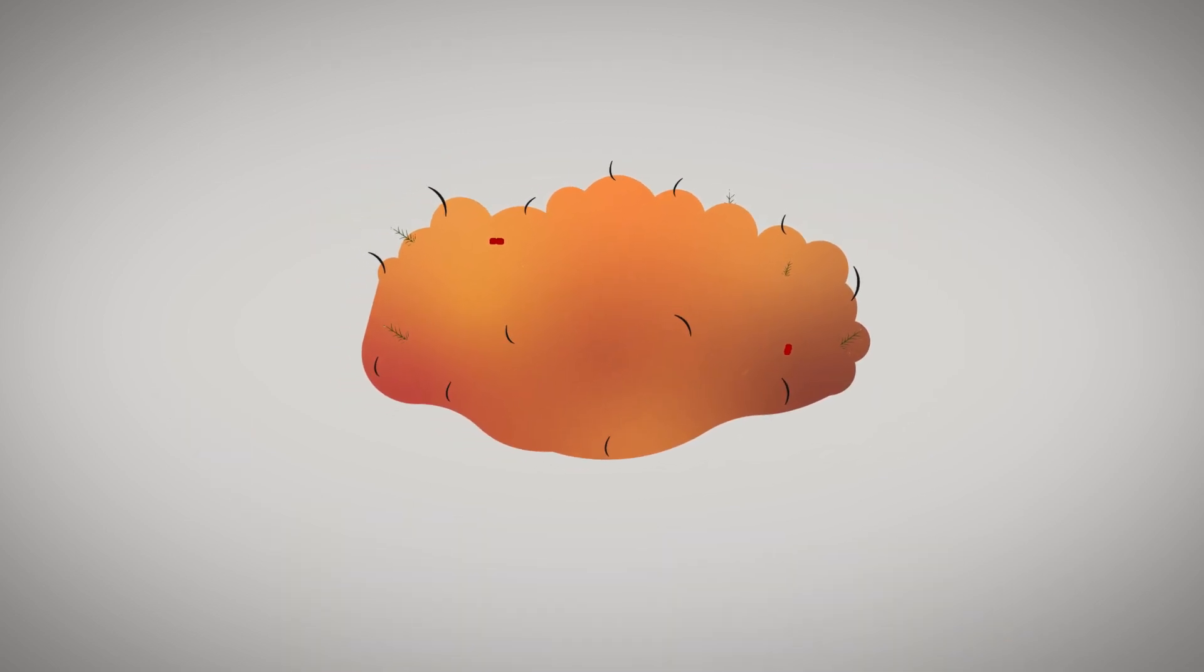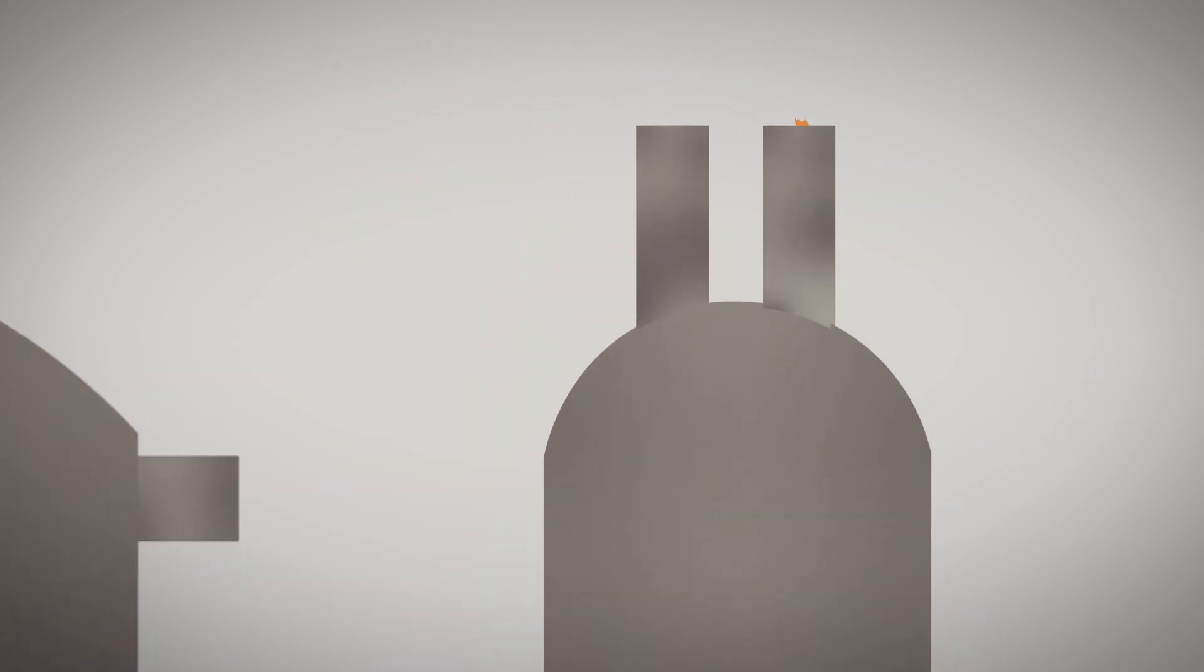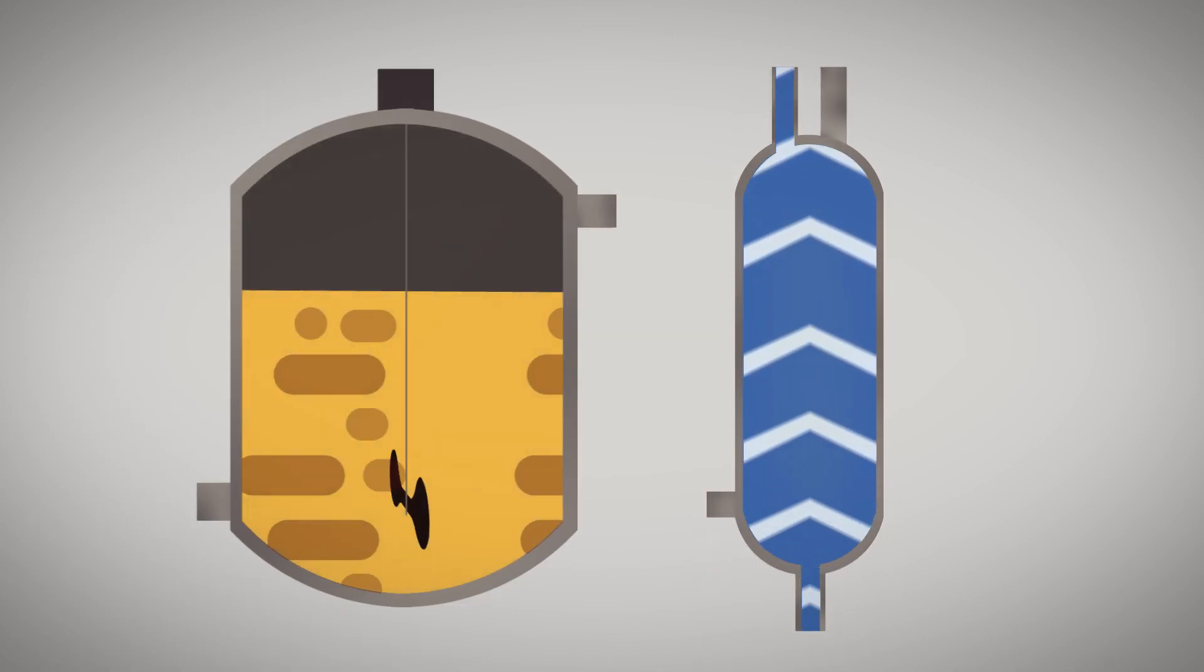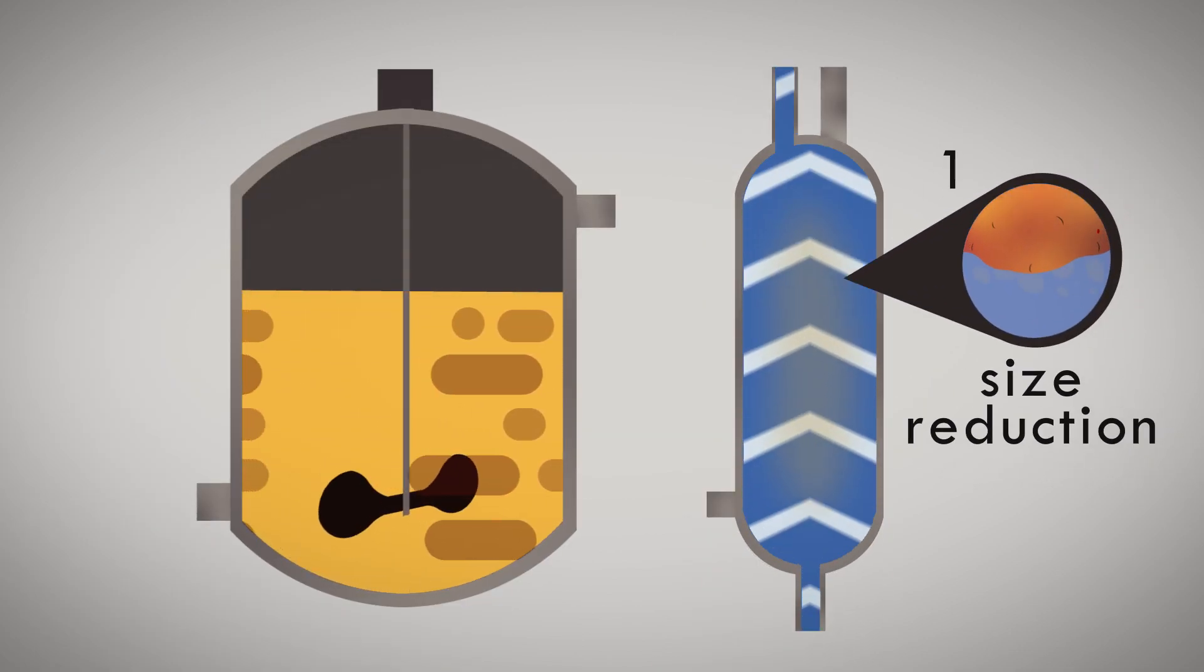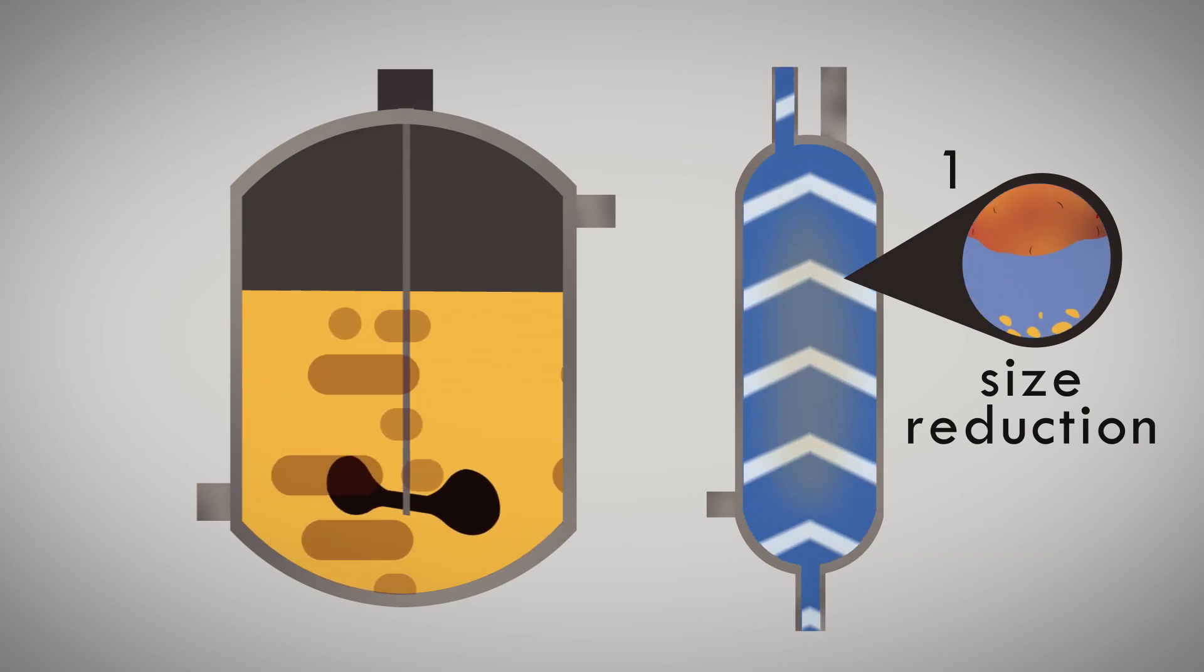After drying this biomass, it proceeds to the first pretreatment process, namely physical pretreatment using a steam explosion. After degraded in the steam explosion,